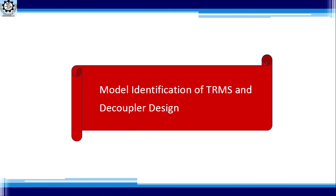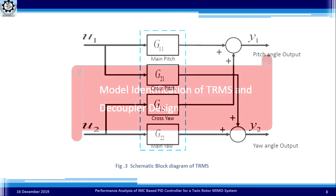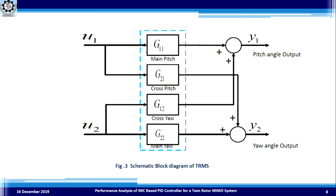The Twin Rotor MIMO System is a non-linear system with strong coupling between the rotors. To keep model identification simple, we choose two linear rotor models with two linear coupling paths. The model identification technique consists of four best-fit models: two for the main dynamics path and two for the cross-coupling path. This is the schematic block diagram of the two-input two-output TRMS system, where U1 and U2 are the two inputs and Y1 and Y2 are the outputs — Y1 is the pitch angle output and Y2 is the yaw angle output.